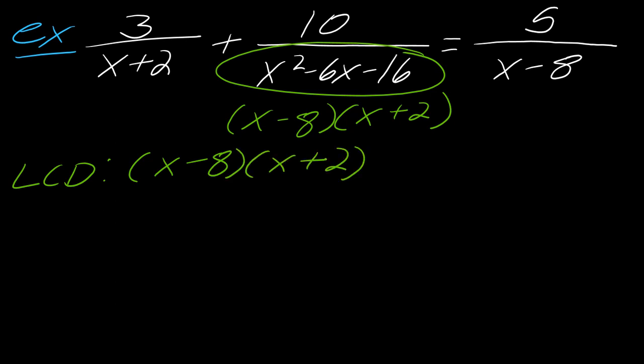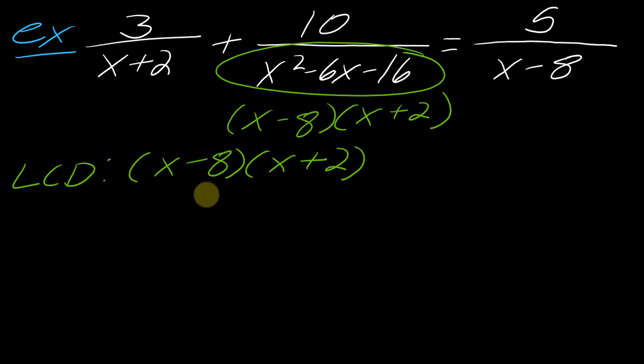If you thought the LCD should have been (x−8)² times (x+2)², you might want to go back and review how to find common denominators. In the interest of keeping this video short, I'm not going to explain how to get to the common denominator since this is review. But if you watched this and totally forgot how this works, do not worry — I have tons of explanations, and I'll drop a link to that in the description so you can review how to find the LCD.